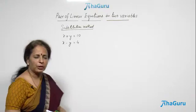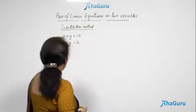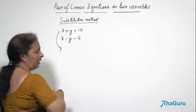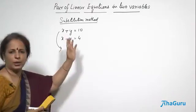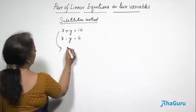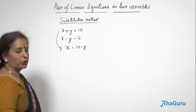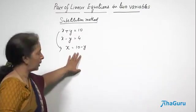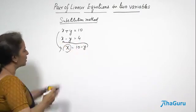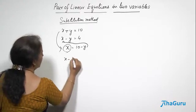The substitution method means you substitute one variable in terms of another. From one equation — whichever seems simpler — in this case both equations are quite simple, so we take the first equation. We can write x as 10 minus y. This value of x, which is 10 minus y, can now be substituted into the second equation, which says x minus y equals 4.